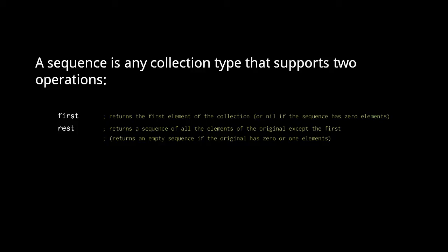To understand the remaining essential collection functions, you must first understand sequences. What Clojure calls a sequence is not any particular collection type, but rather an interface, a set of operations implemented by some collections.